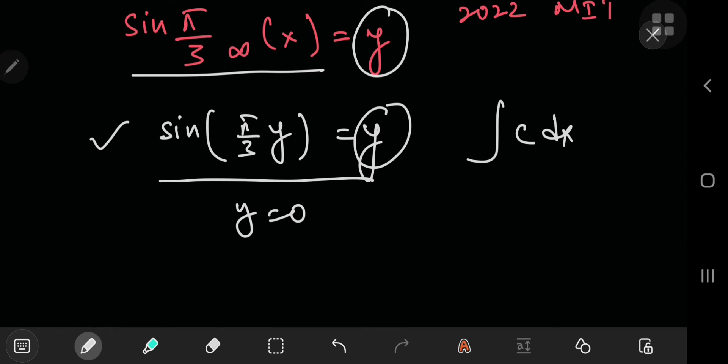Why is that so? Because if y equals zero, then this implies that sin(π/3) sub infinity of x equals zero, and this is valid in the case where x equals zero. Correct, but the problem is...